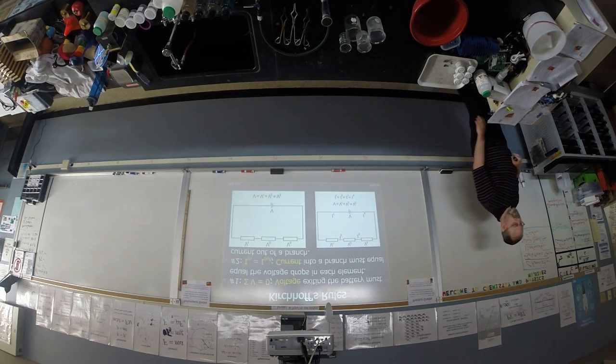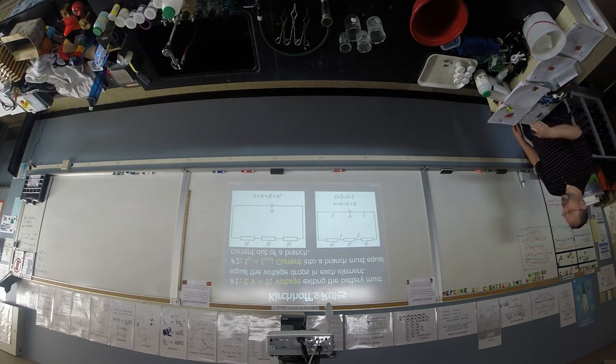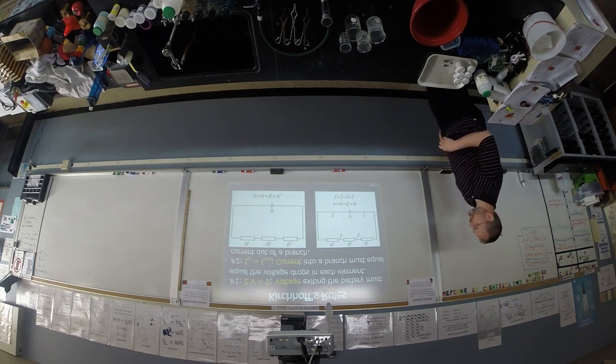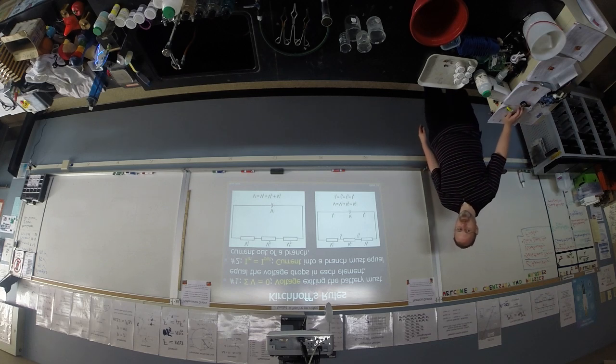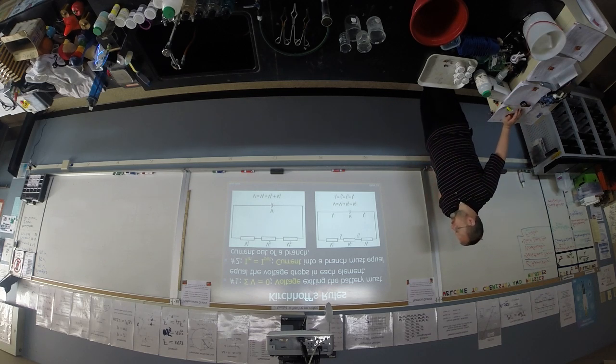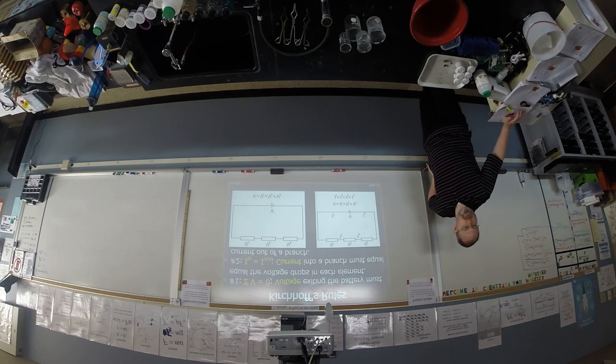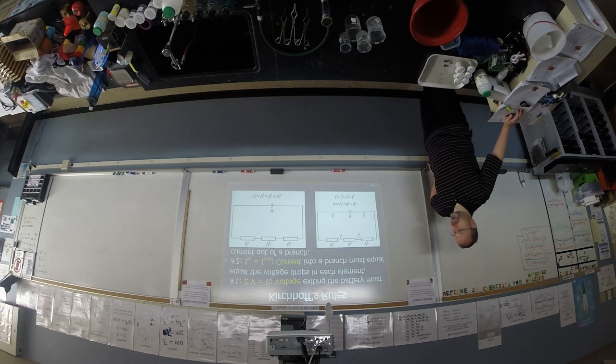Rule number two. Current in is current out. You can't lose electrons. So whatever current you got in, you got to have current coming out. Can't lose your electrons. If you got one amp leaving the battery, you better have one amp coming back to the battery. If you got a billion electrons every second leaving, you better have a billion electrons every second coming back.